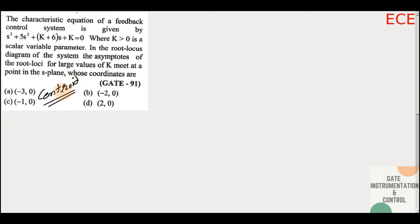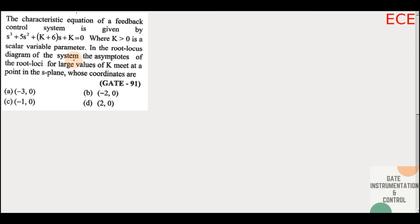Nothing else is being asked — only the centroid. Because from the centroid, the asymptotes emerge. From that same point, we find the angles of the asymptotes and draw them. That is why the asymptotes meet at one point, and that point is called the centroid — that is what we need to find here.